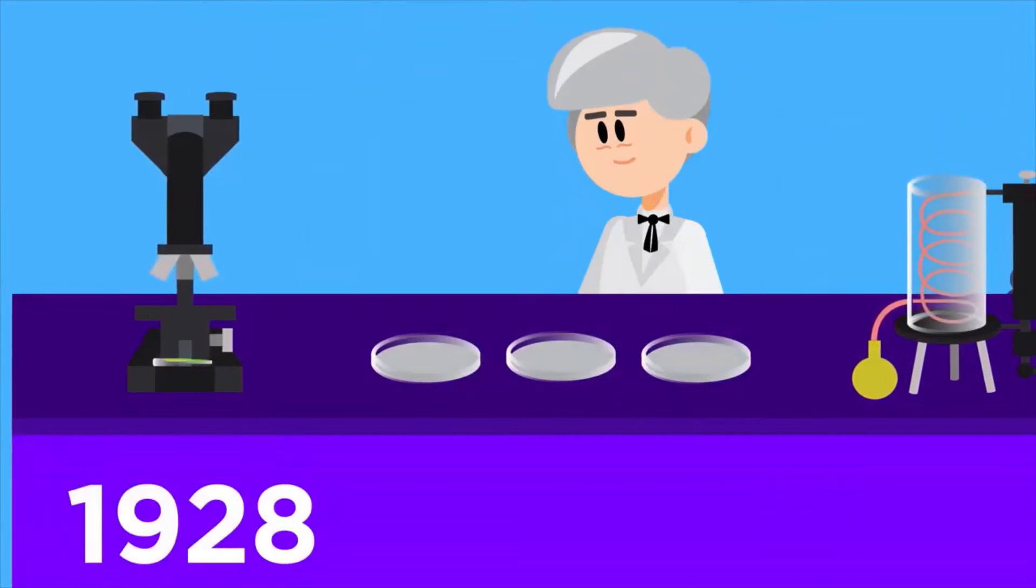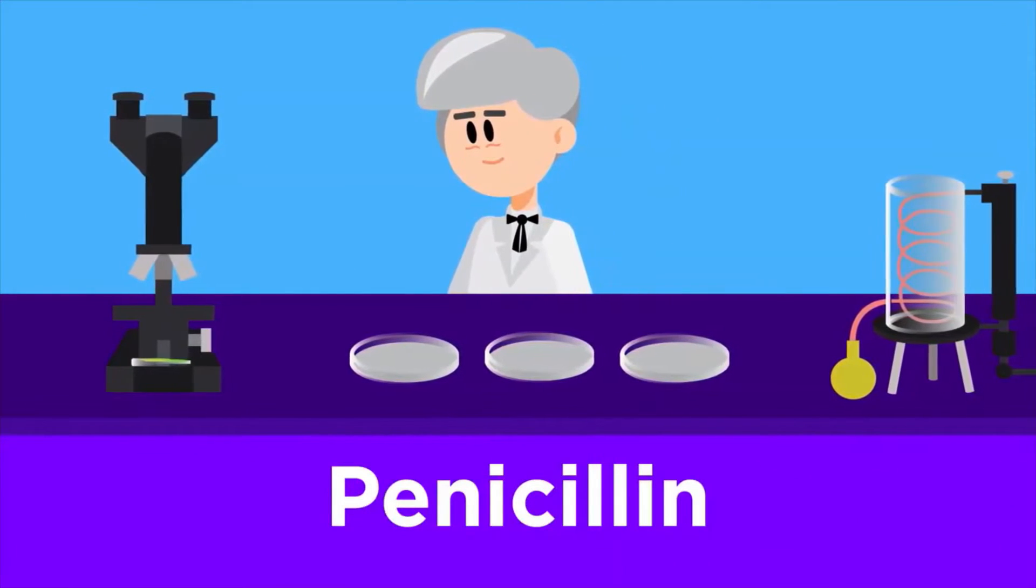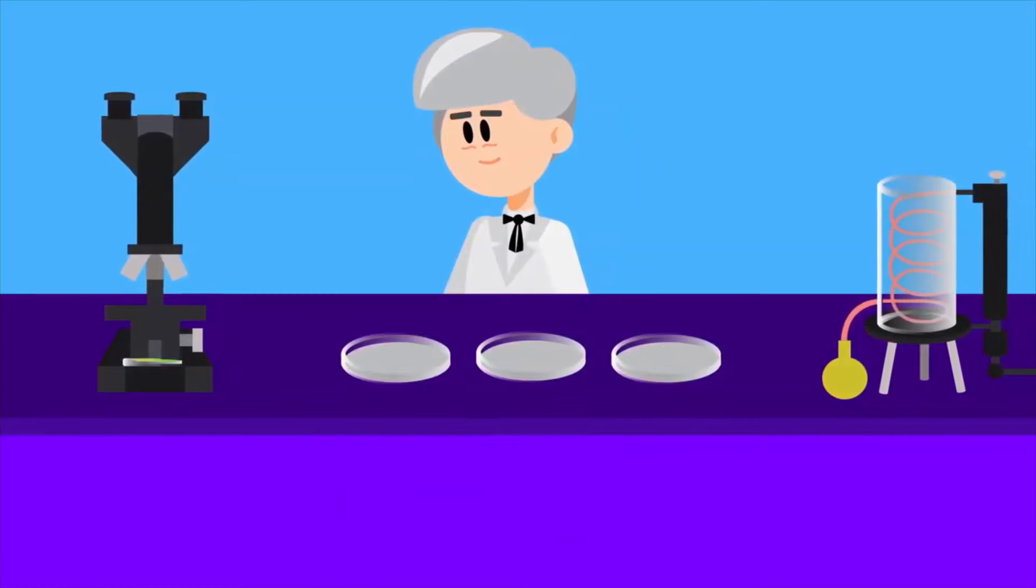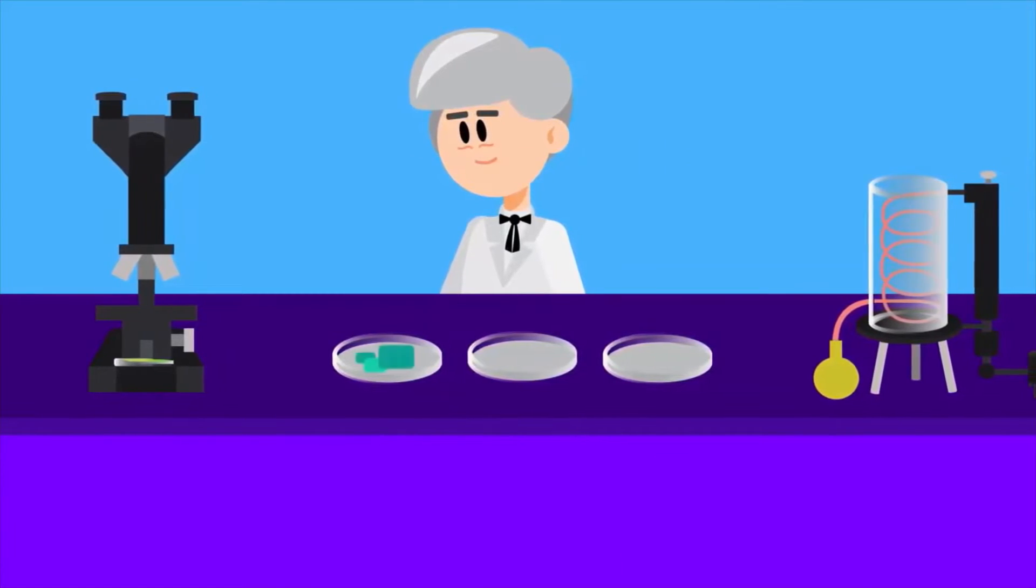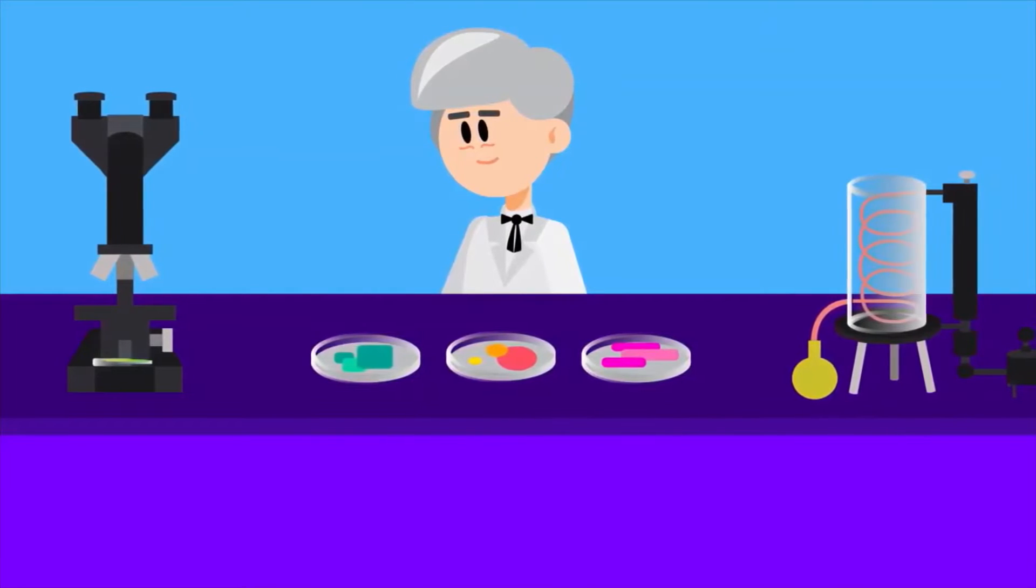In 1928, Alexander Fleming discovered the very first antibiotic, penicillin. One day, after studying influenza, he noticed that mold had accidentally developed on a set of petri dishes being used to grow the bacteria called staphylococcus.